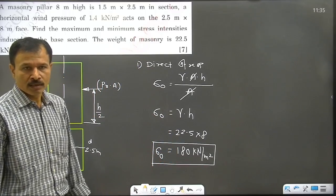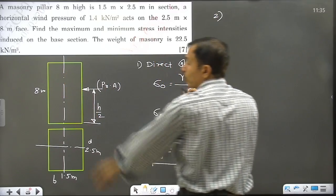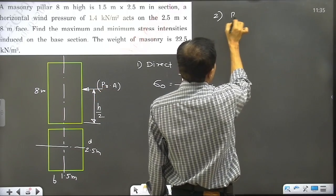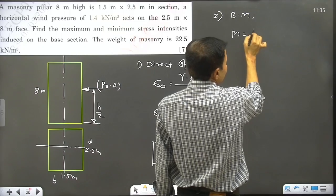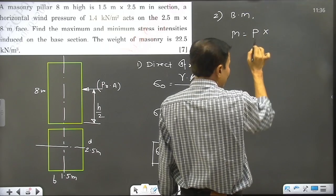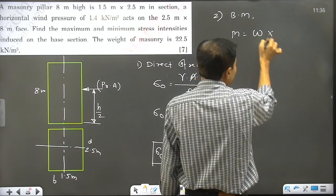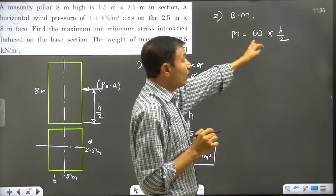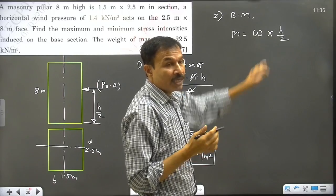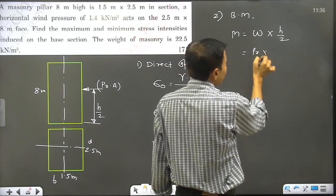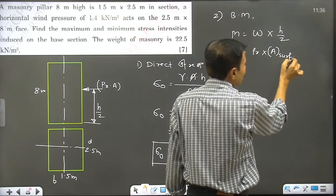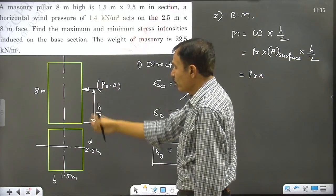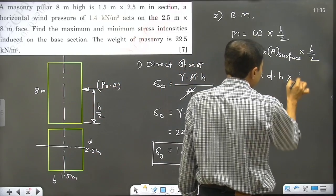The first step is perfect. Now the second step: wind pressure bending moment. The bending moment M is equal to the wind pressure force, which is pressure into area of that surface — that is, pressure × d × h — multiplied by h divided by 2. So M = pressure × d × h × h/2.